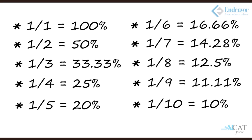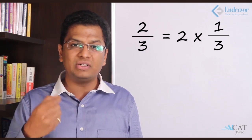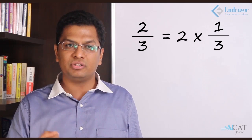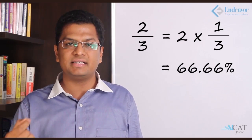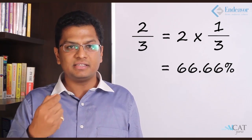This is the way we convert ratios 1 upon x into percentage. It can also be used to convert 2 upon 3. So 2 upon 3 is nothing but two times 1 upon 3. 1 upon 3 was 33.33%, so 2 upon 3 becomes 66.66%. This is how percentage and ratios are interchangeably used.